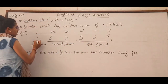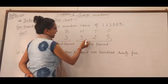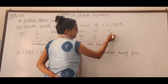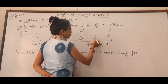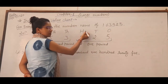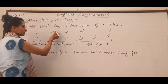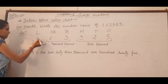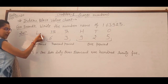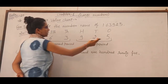We arrange the digits: 1, 6, 3, 9, 2, 5. So 5 is ones place, 2 is tens place, 9 is hundreds place, 3 is thousands place, 6 is ten thousands place, and 1 is lakhs place.